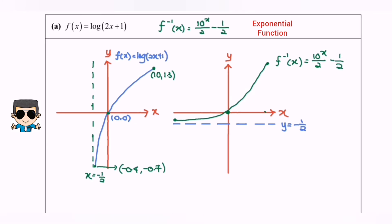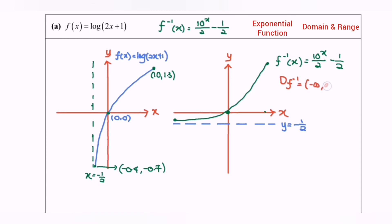Now let's discuss the domain. Domain for F inverse — by referring to the graph, the domain is negative infinity until infinity. Kindly refer to the value of x on the left hand side and the right hand side. For the range, you have to refer to the value of y. The minimum value for y would be negative 1 over 2 until positive infinity. So here we are, and thanks for watching.